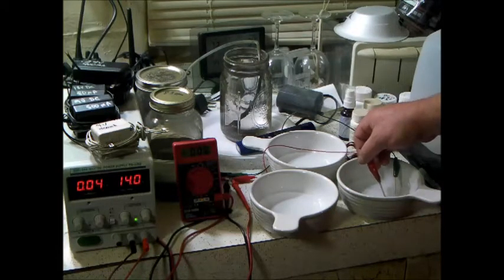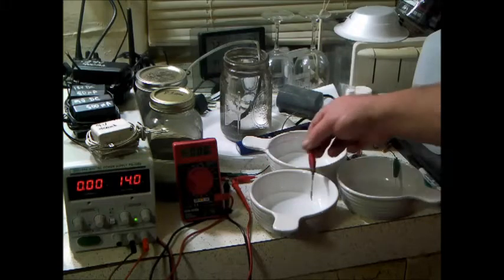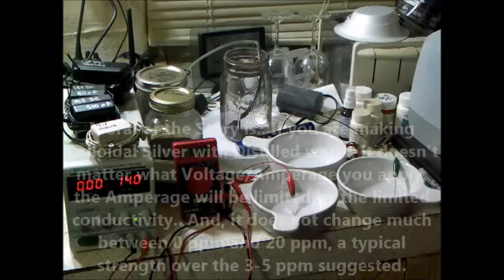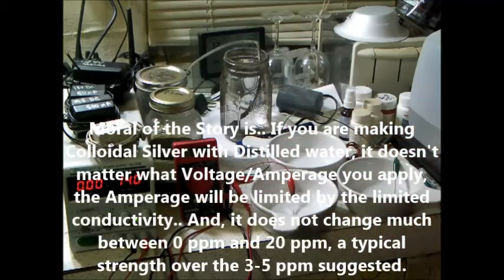So the colloidal silver is going to make based on the available current that's going to pass through the solution. This is a heavy, heavy salt solution. So voltages and amperages don't make that much difference, because you're going to get very little anyway. You're going to have very, very small micro amounts of current.